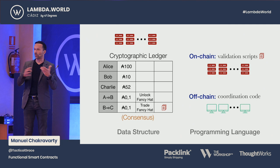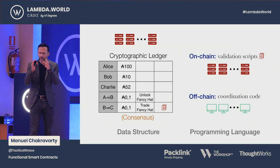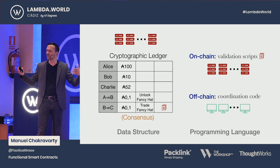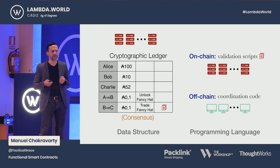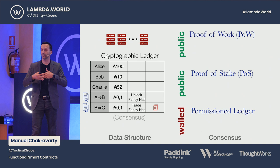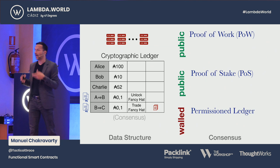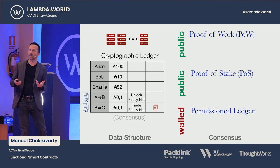Which brings one more interesting point into play: if there are many servers — not only one server which maintains this data structure but actually many — how do we know they collaborate properly? How do we know nobody's going to cheat? This is what's called the consensus problem. We need some sort of distributed algorithm which achieves consensus between these servers in a way that third parties actually believe everybody played by the rules — in particular that everybody follows the correct validation rules. There are basically three ways of doing that which we know about today. The classic one you may have heard about, which is used by Bitcoin, is proof of work.